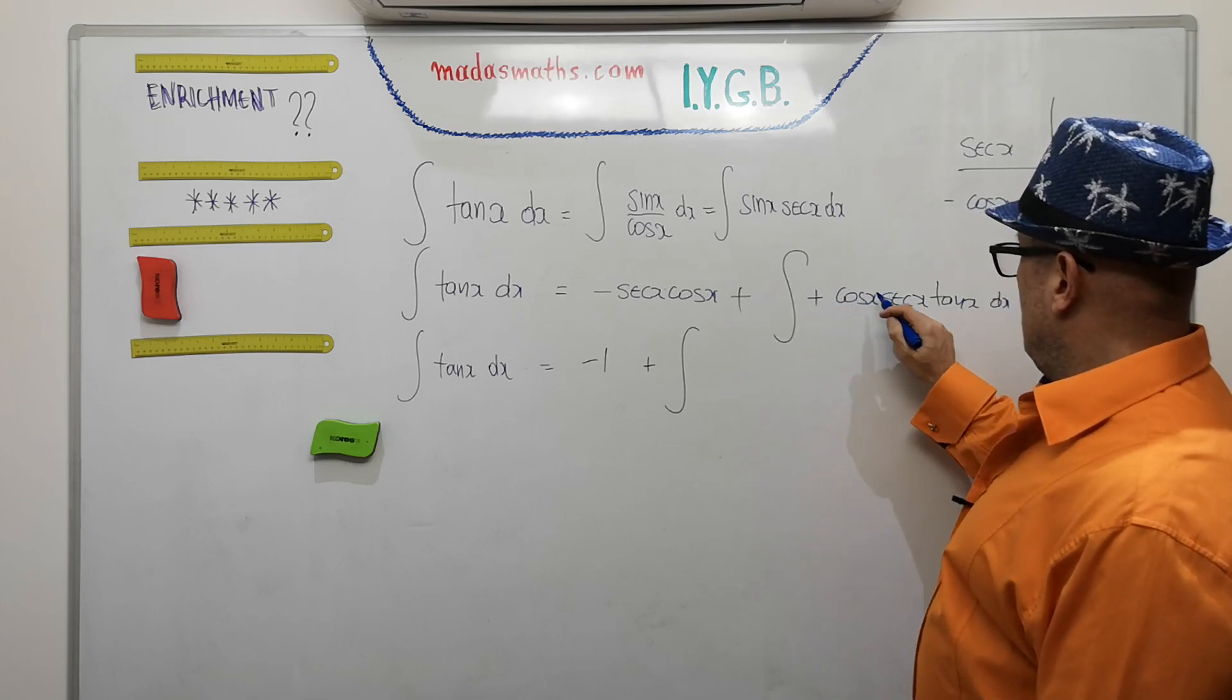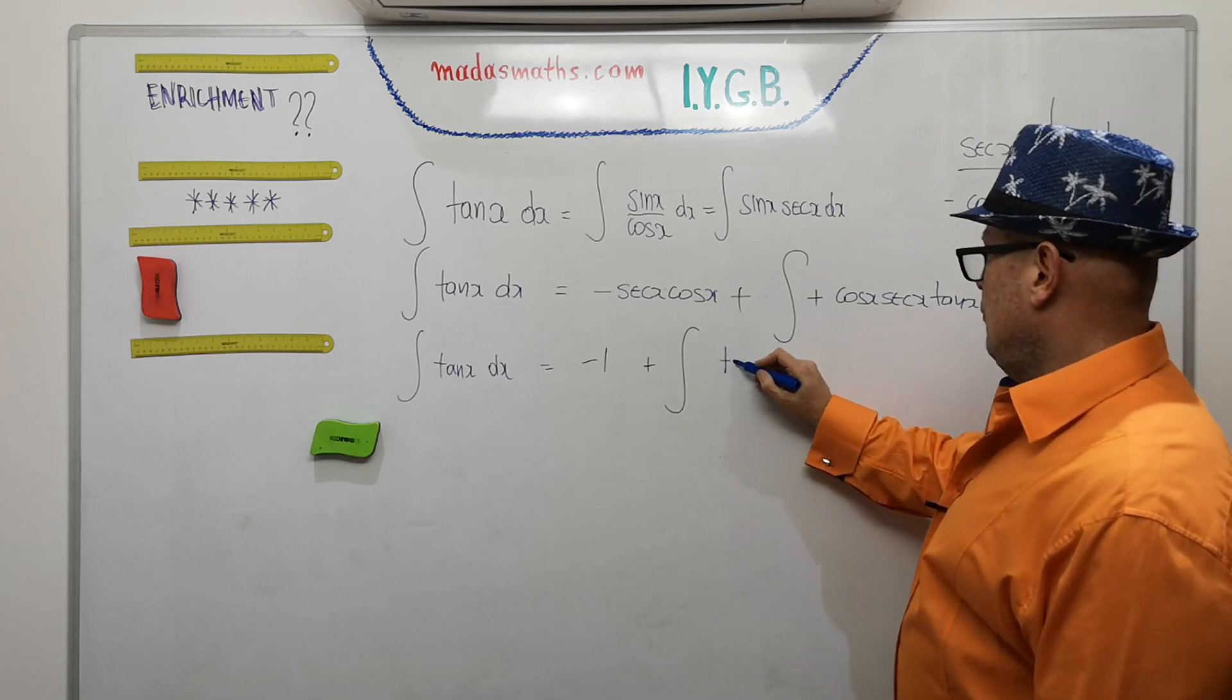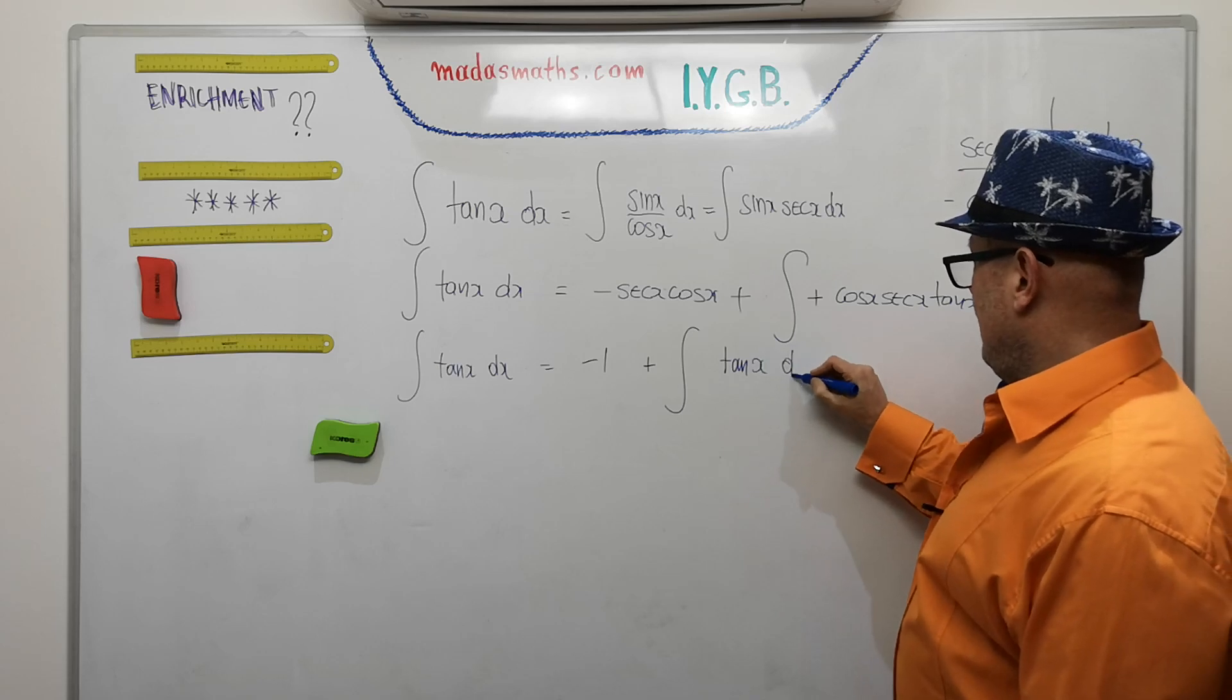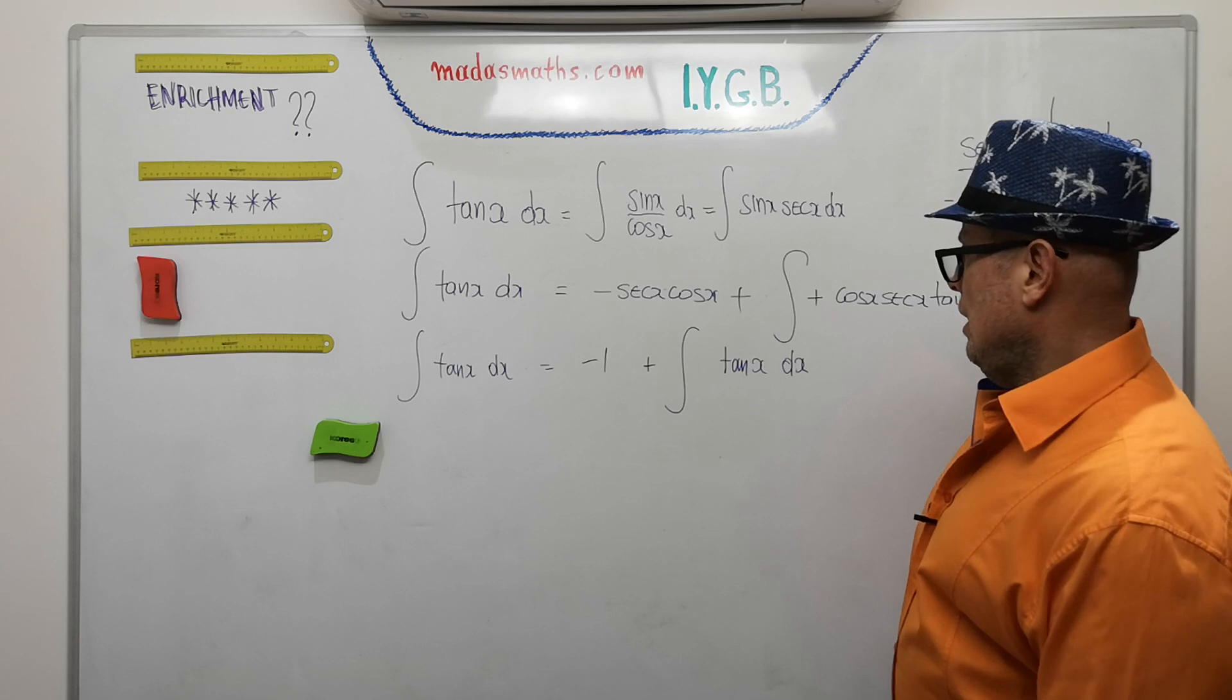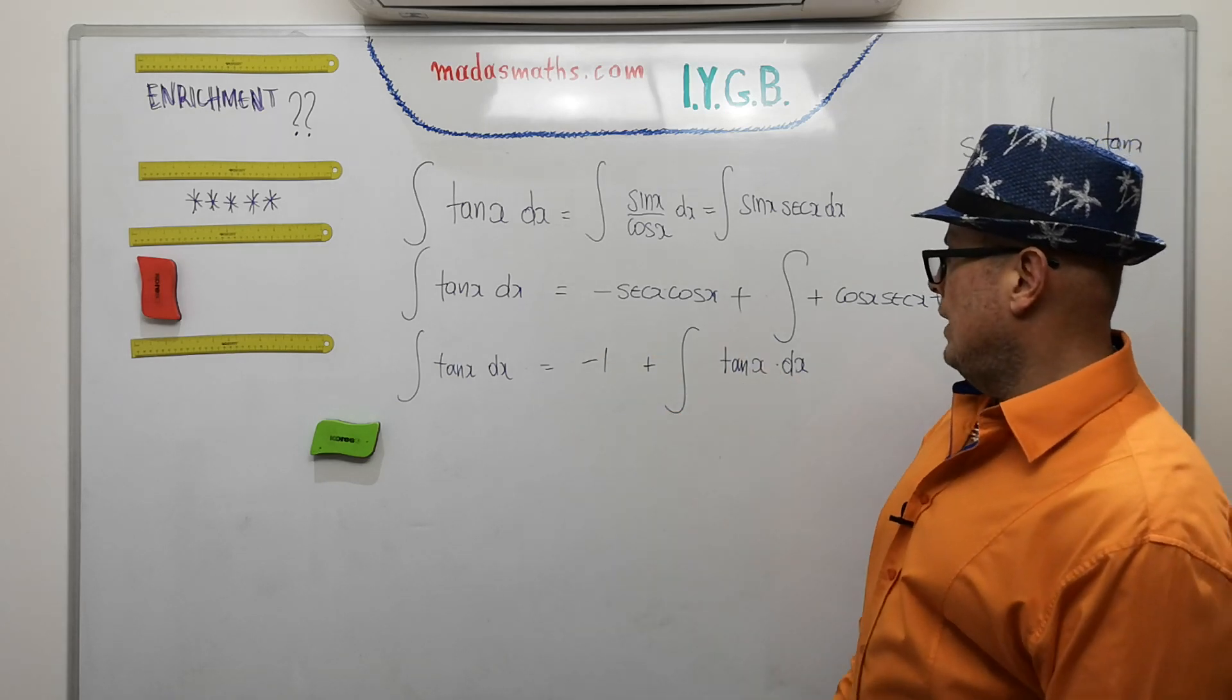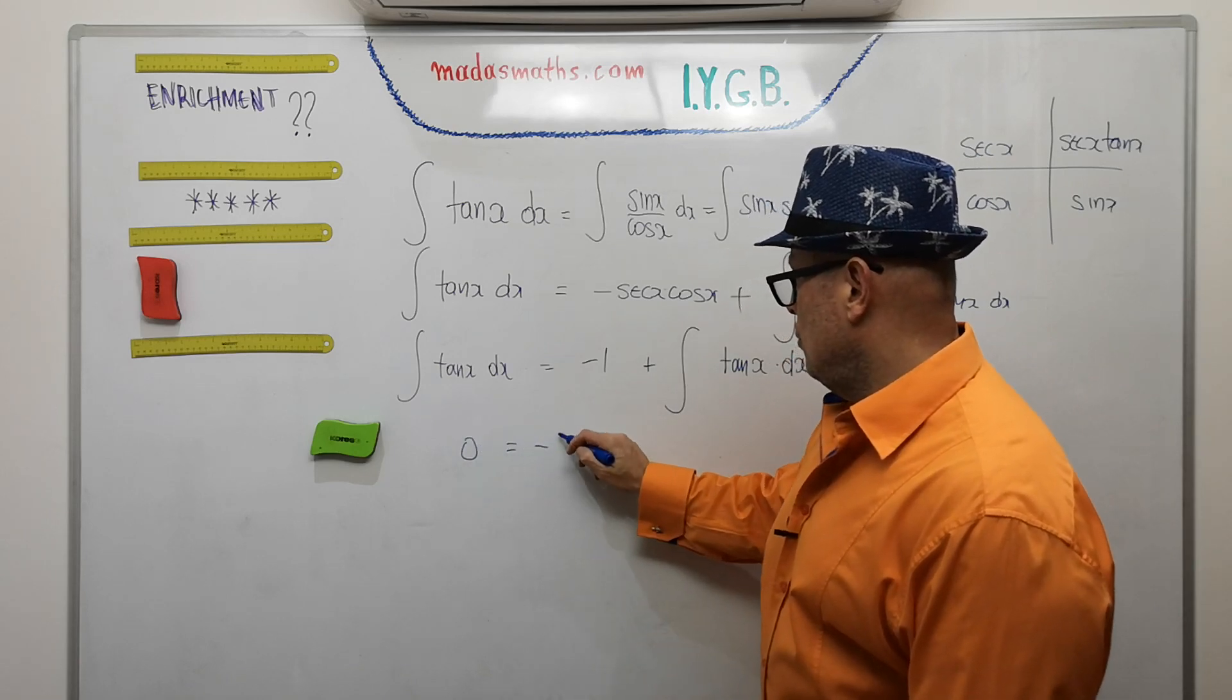We have a cos times a sec which again is 1, and we got a tan of x dx. And I can subtract this integral which says tan x to the left, so I've got nothing left. Zero is equal to minus 1.